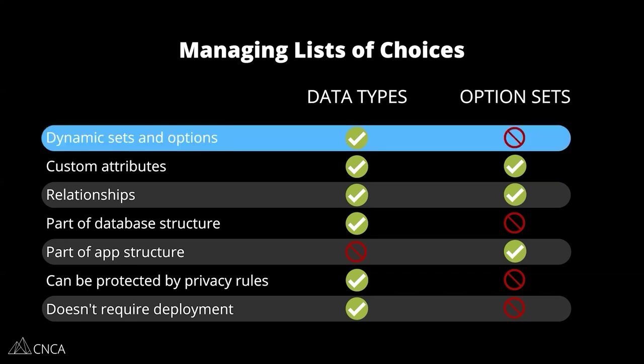The first one is the ability to create dynamic sets and options within those sets. The only way your users can create their own option sets and their choices is through the data types, because you can set up workflows for them to enter in information and save them to a record in your database. Your users do not have the ability to create option sets or choices. They do not have the ability to edit those. That is a huge difference. So if you know that your list of choices should be customizable by your users, you need to work with the data types. Option sets are not a capability for that.